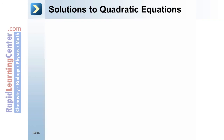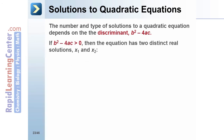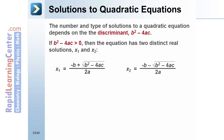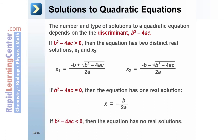The number and type of solutions to a quadratic equation depends on the discriminant, b squared minus 4ac. If the discriminant is greater than 0, then the equation has two distinct real solutions, x₁ and x₂. If the discriminant equals 0, then the equation has one real solution, negative b over 2a. If the discriminant is less than 0, then the equation has no real solutions.